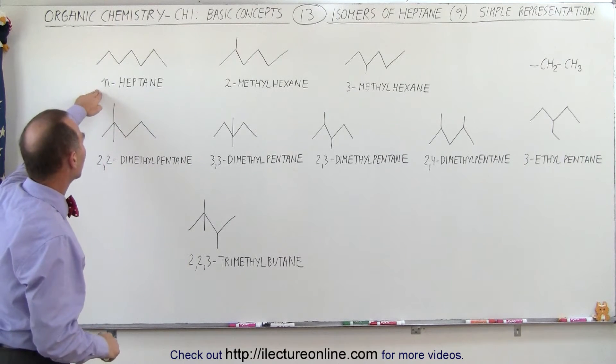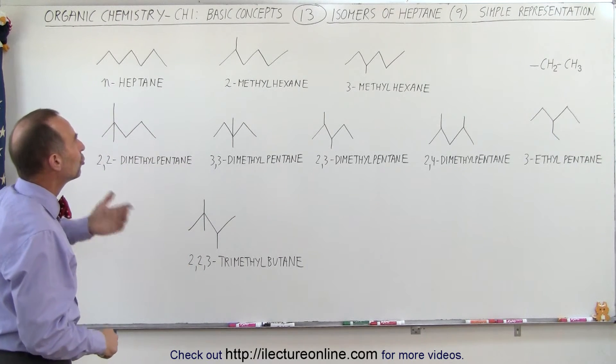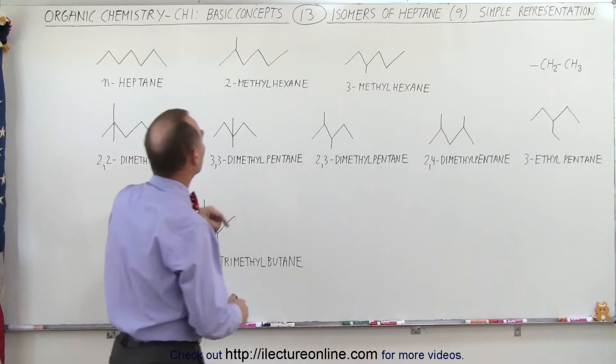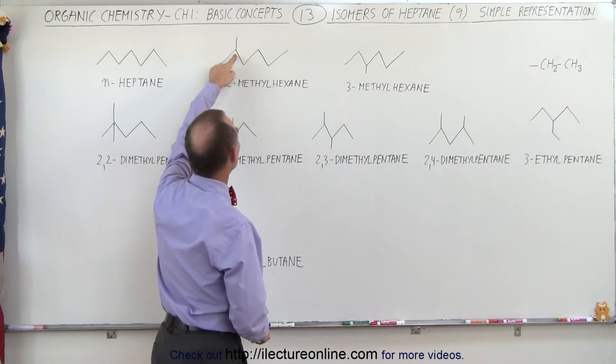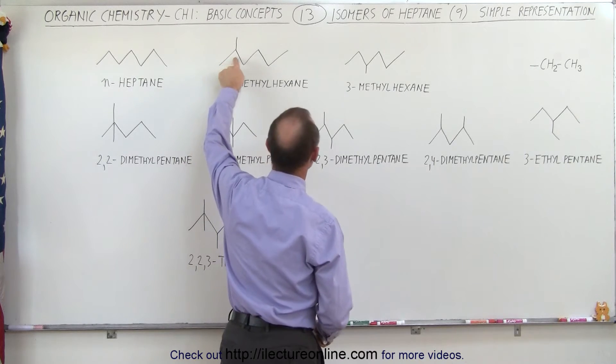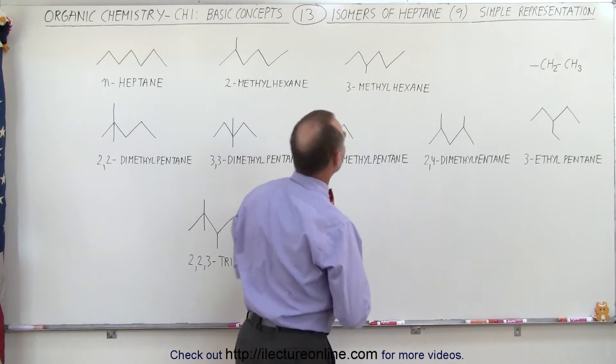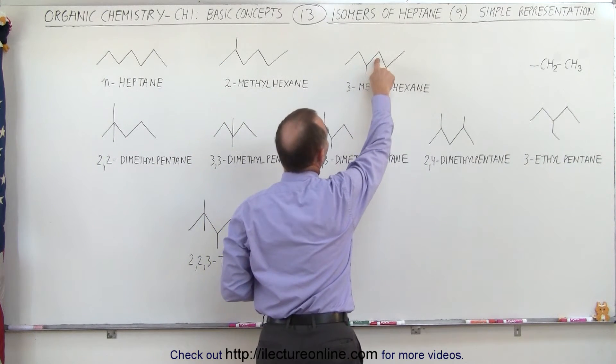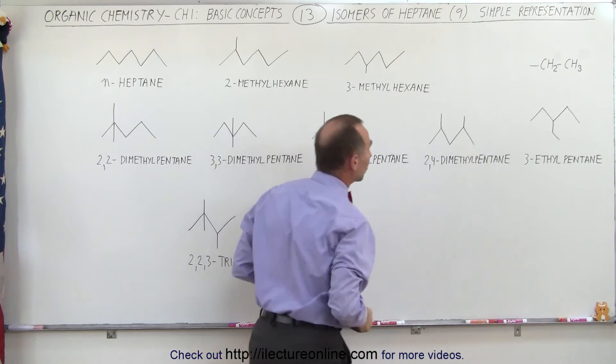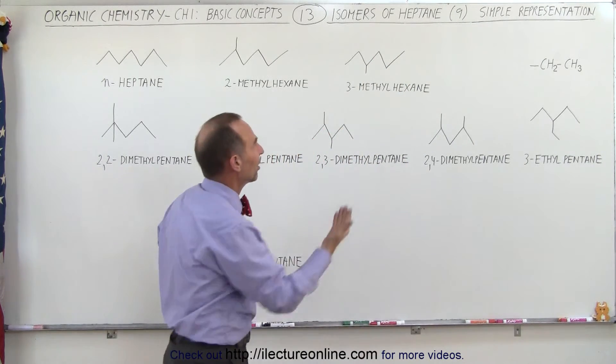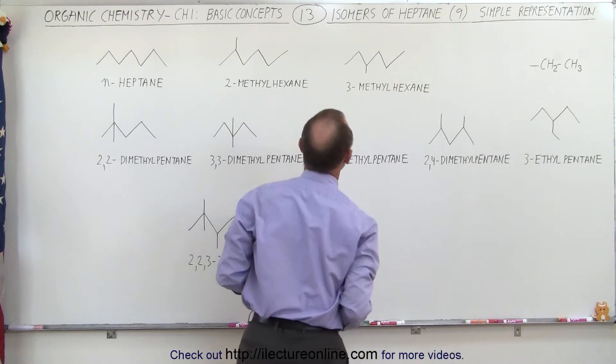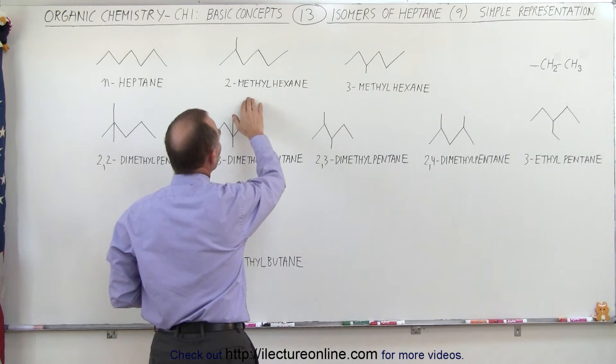So here's the linear form of heptane, and then we have two forms, two isomers, where we have a single methyl group either connected to the second carbon or to the third carbon. If we connect it to the fourth carbon, that is the same as the third carbon coming from the other direction, so it would look exactly the same if you then were to flip the isomer around. So we only have two of these.